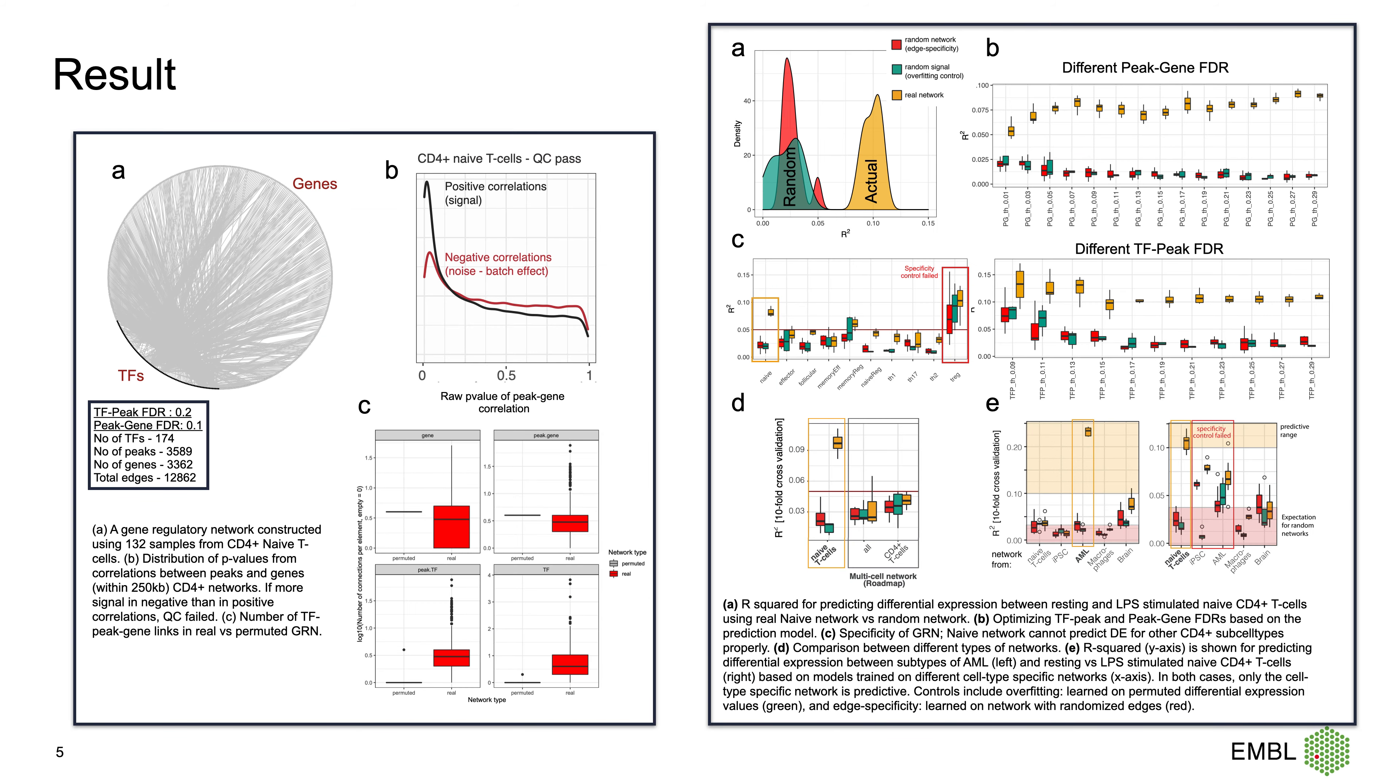Here are some parts of the results. In the left panel, we have phase one GRN construction for 132 RNA and ATAC samples for CD4+ naive T cell. As you can see, we have around 180 transcription factors and around 3,020 genes with more than 12,000 connections.